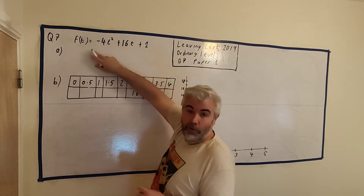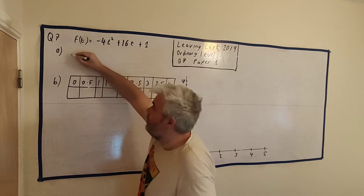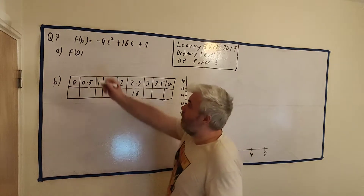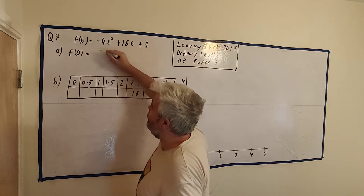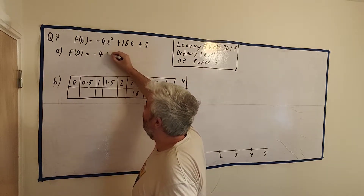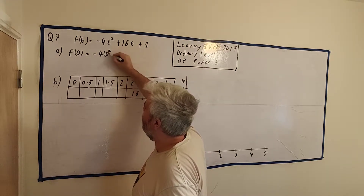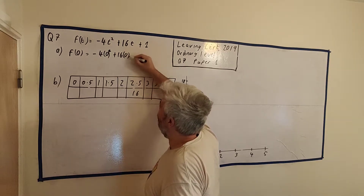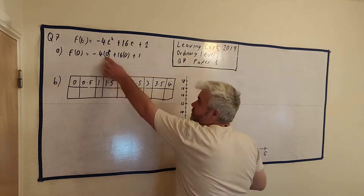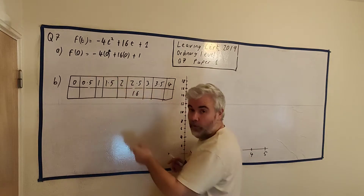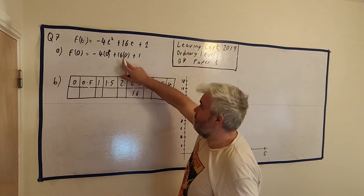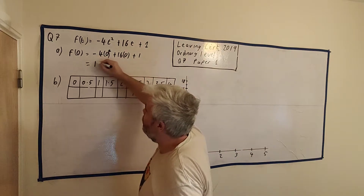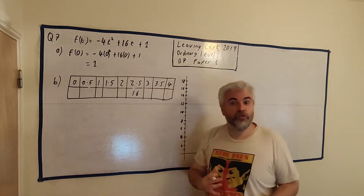The height of the ball is just f(0), because that's what this equation tells us. We just fill in t = 0: minus four times zero squared, plus sixteen times zero, plus one. Well, this is just zero plus zero plus one. We're just left with one. So the answer to part A is just one.